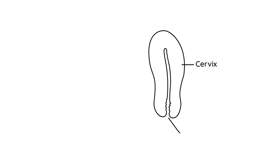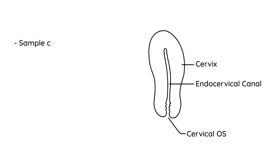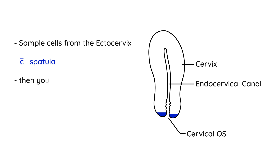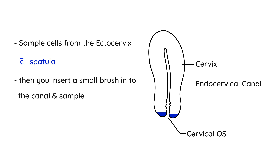Before getting to clinical vignettes, let's draw a little anatomy to explain how this technique is done. This is the cervix; this opening is known as the cervical os, and this canal is known as the endocervical canal. When you do a pap smear, the very first thing you need to do is sample cells from the ectocervix using a spatula — a small, specific spatula. Then you insert a small brush into the canal and sample the endocervix. That's the proper technique.